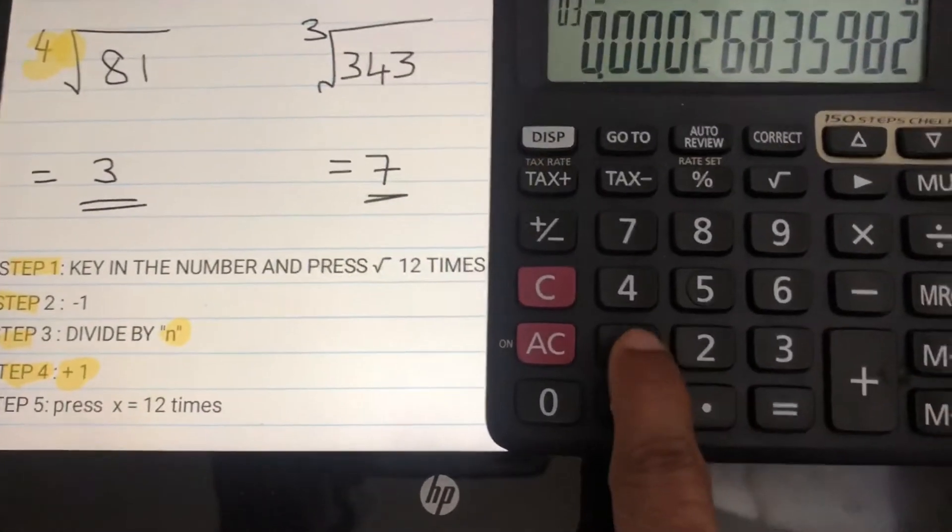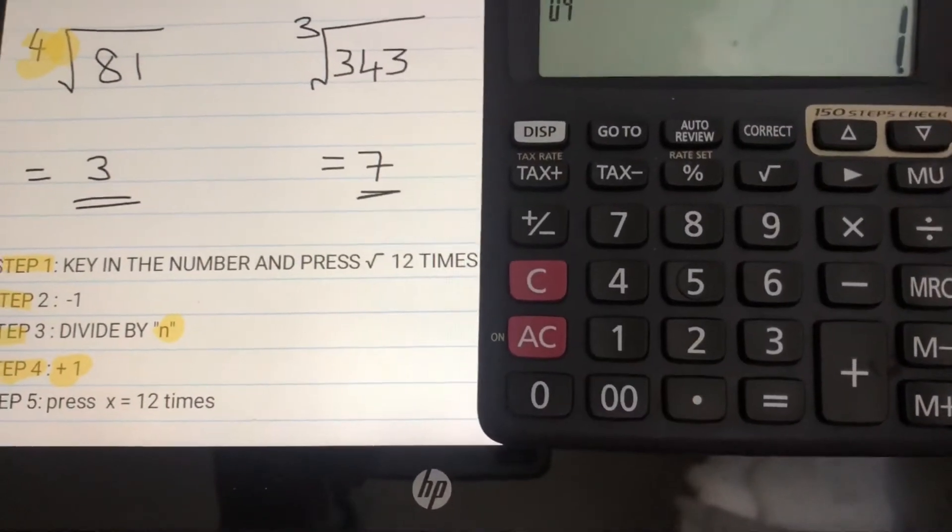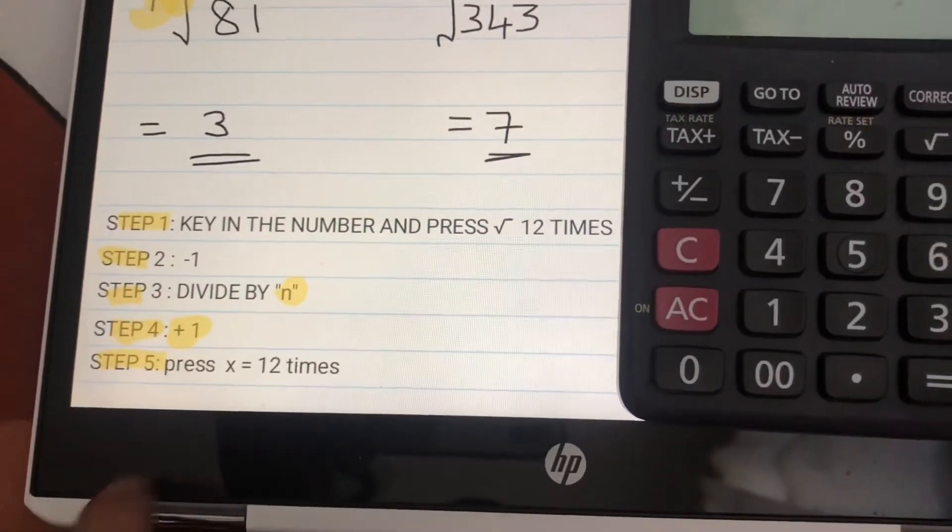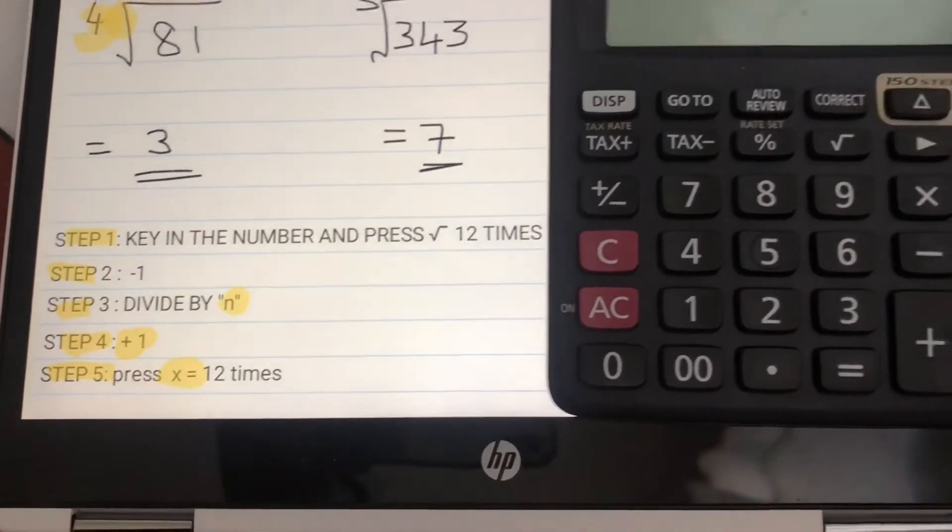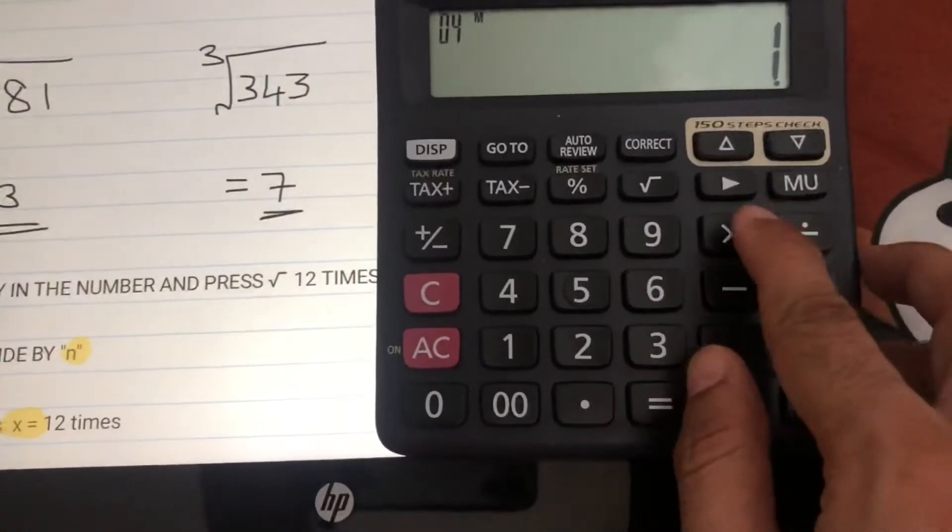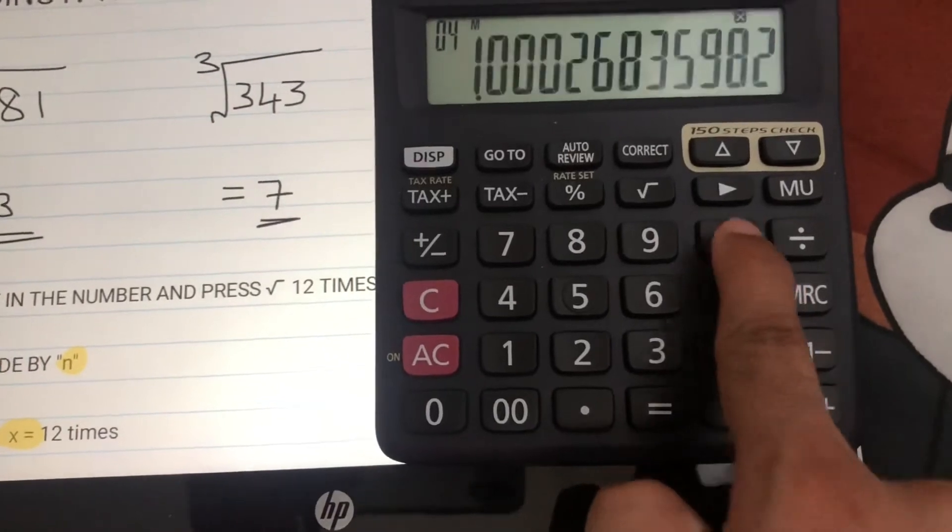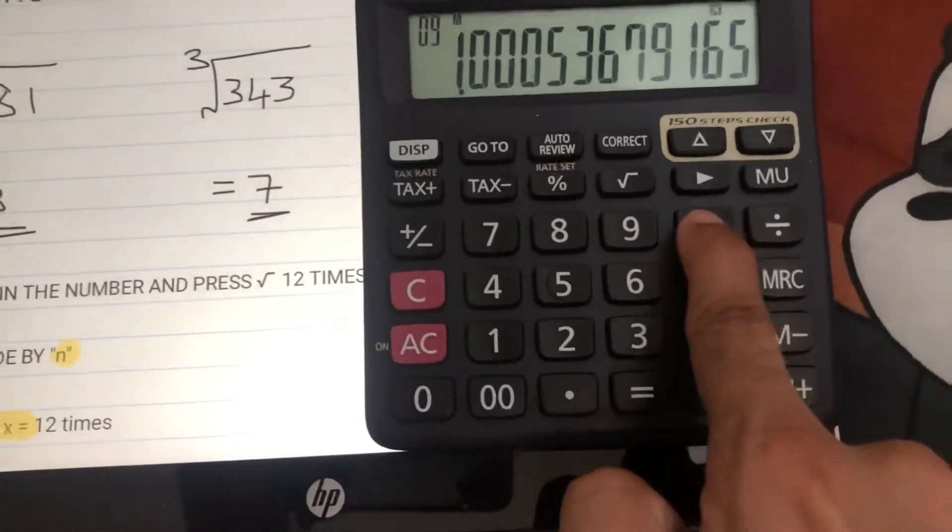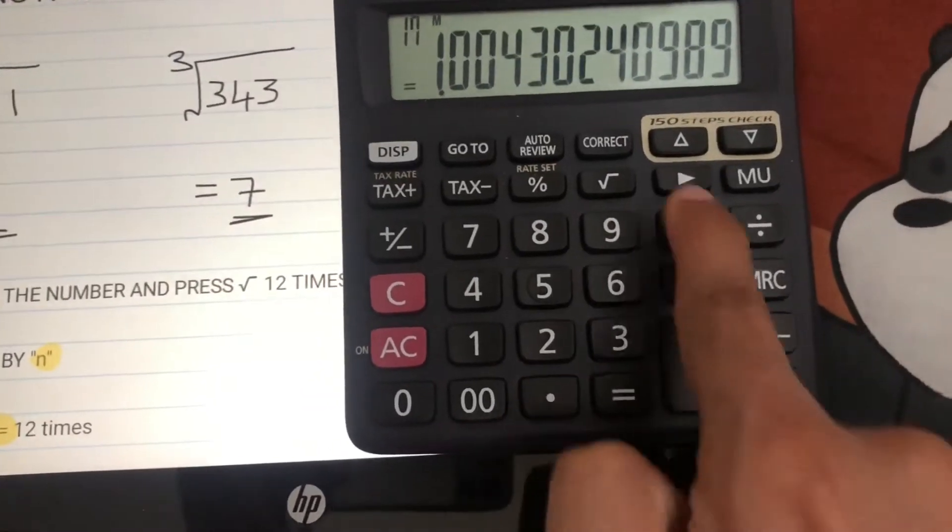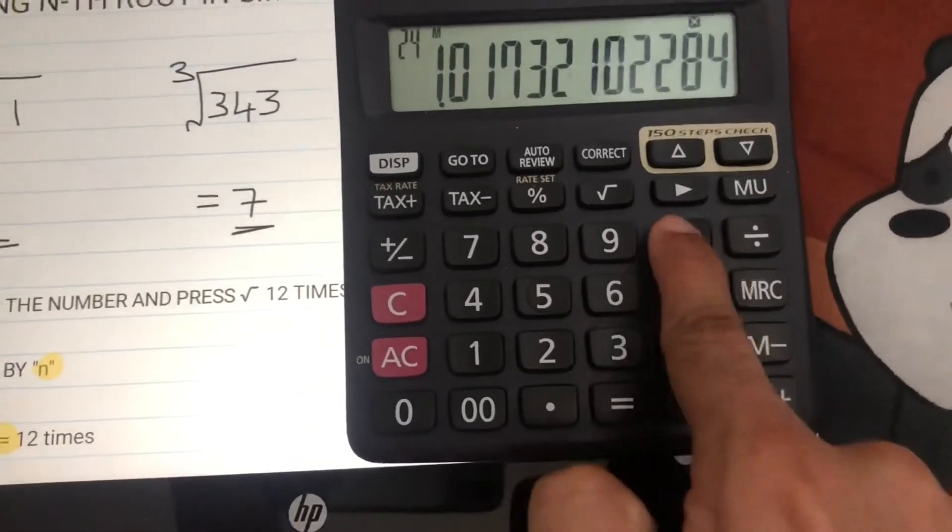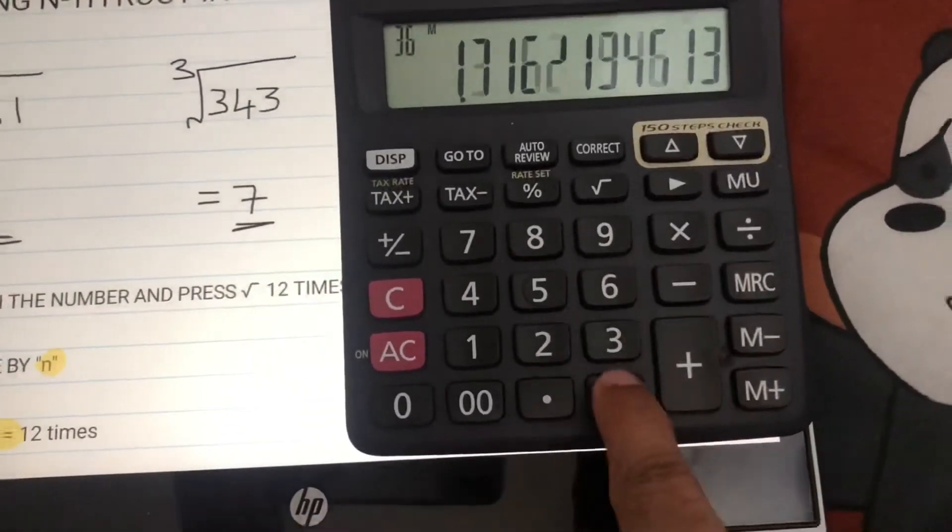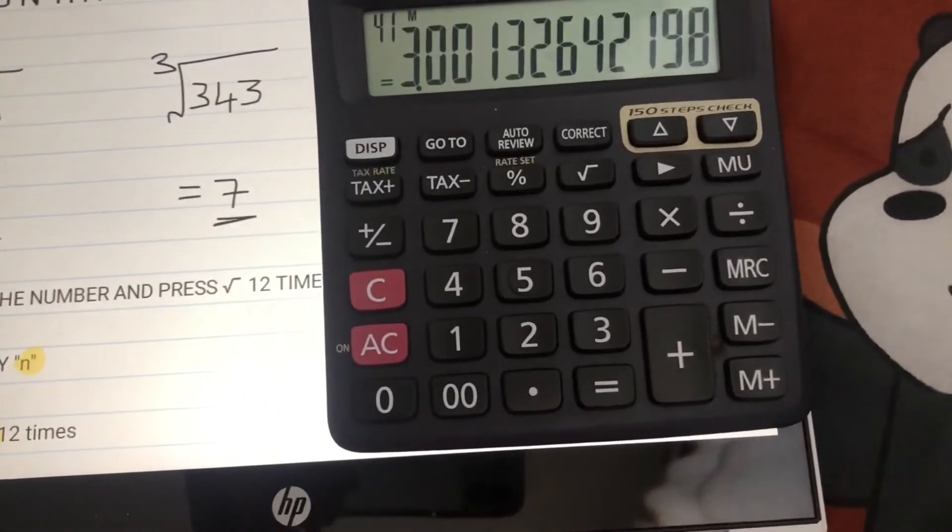Next is step 4, which says plus 1, so I'll do plus 1. Now the final step - very important - step 5: press multiply and equals 12 times. Be careful, you have to count. So see here, multiplication: 1, 2, 3, 4, 5, 6, 7, 8, 9, 10, 11, 12.